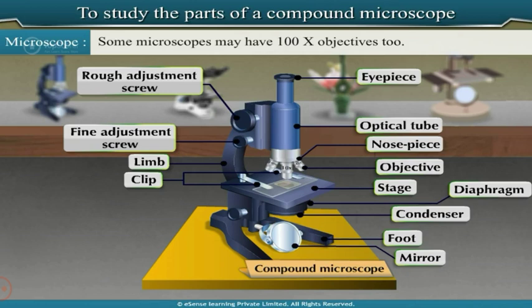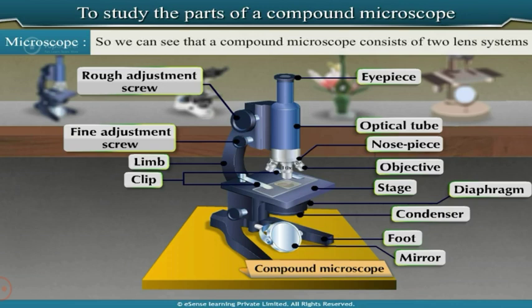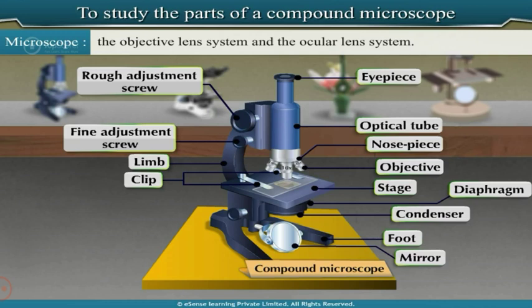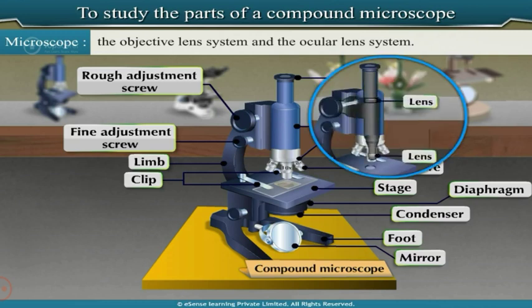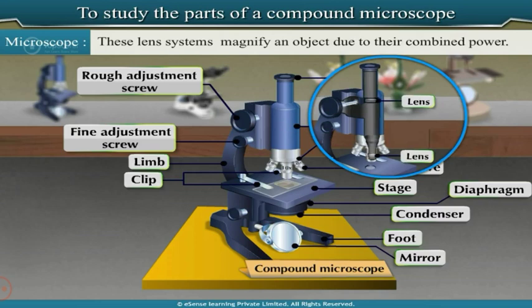The objectives can be brought in line with the eyepiece. A compound microscope consists of two lens systems: the objective lens system and the ocular lens system. These lens systems magnify an object due to their combined power.